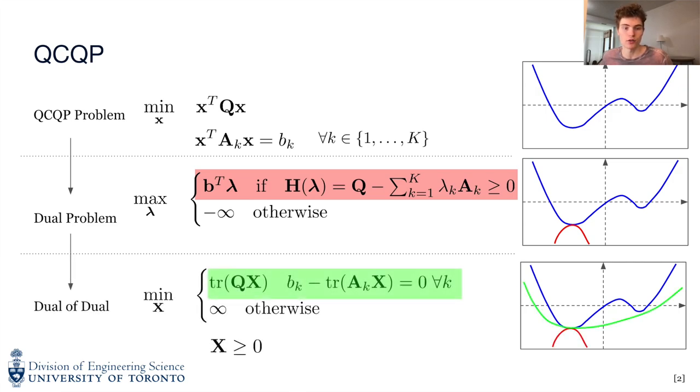The dual of the dual, also called the primal relaxation, takes the form of a semi-definite program, SDP, which is a convex relaxation of the primal problem. Thus, if strong duality holds, we can solve this primal relaxation for a globally optimal solution.